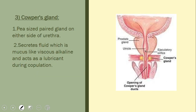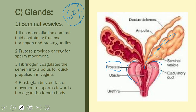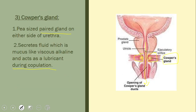The third gland is the Cowper's gland, also called the bulbourethral gland. It is a small, pea-shaped gland — a paired gland on either side of the urethra. It secretes a lubricant that is helpful during the process of copulation. So the three glands are: seminal vesicle, prostate gland, and Cowper's gland.